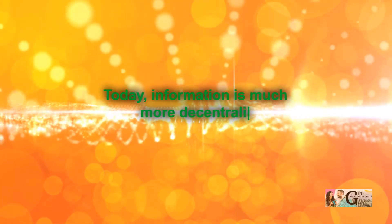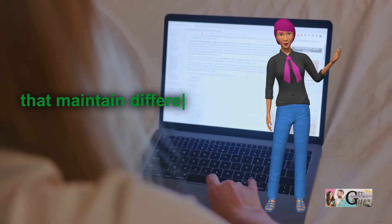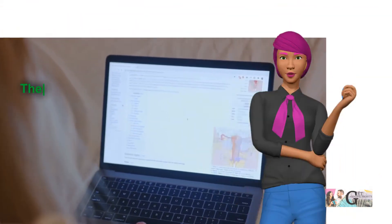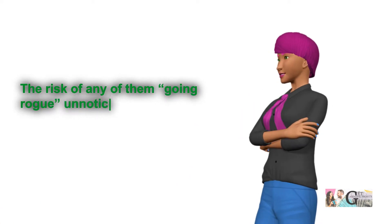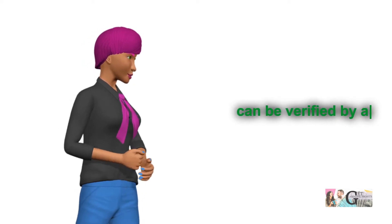Today, information is much more decentralized with over 130,000 active editors that maintain different Wikipedia pages. The risk of any of them going rogue unnoticed is much smaller since each edit is public and can be verified by anyone.